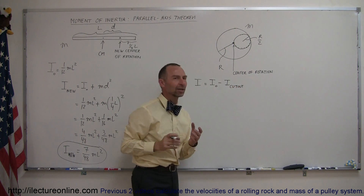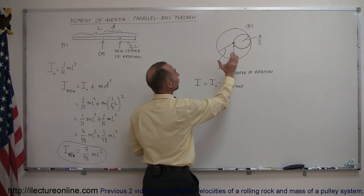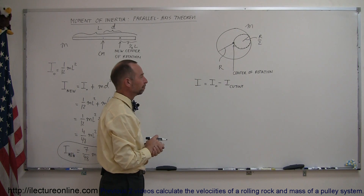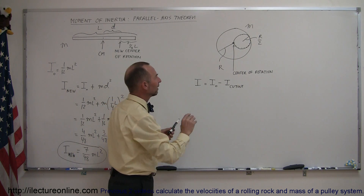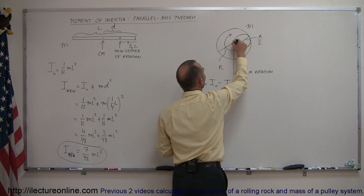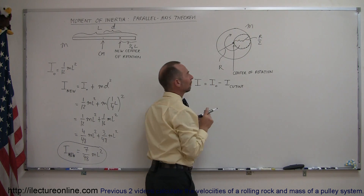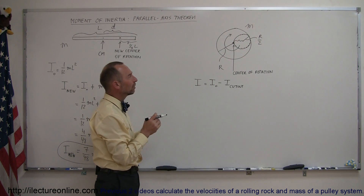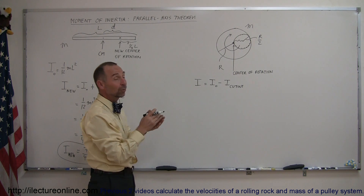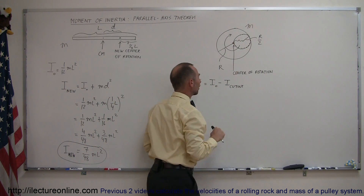You might ask how a cutout can have a moment of inertia if it doesn't have mass. Well, it's minus the mass this piece would have if that piece were still there. Also notice that since this is going to be rotating, the cutout piece has a displacement from the point of rotation equal to the radius of the missing piece, which is half the radius of the disk. So this is one half the radius of the disk.